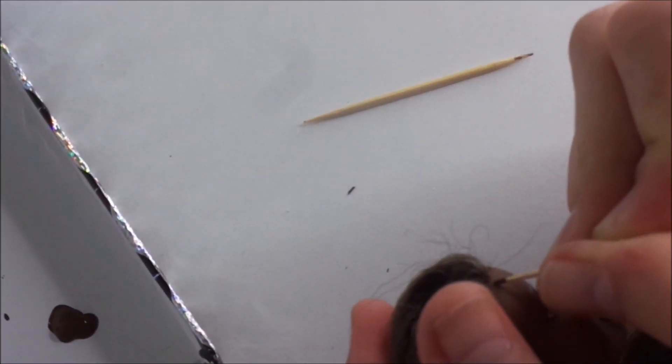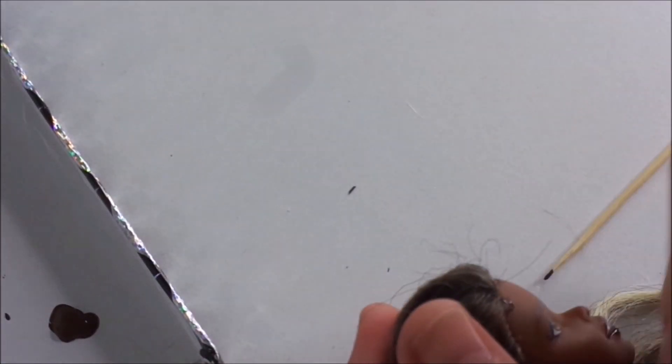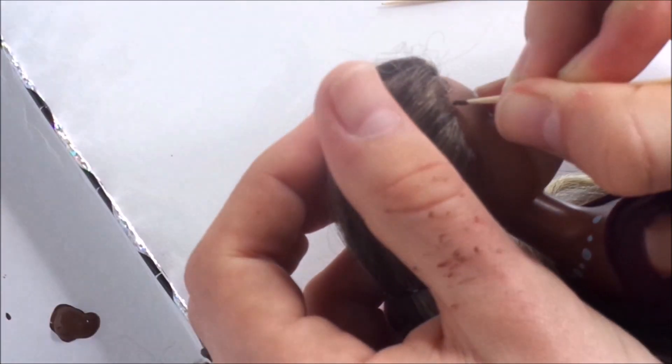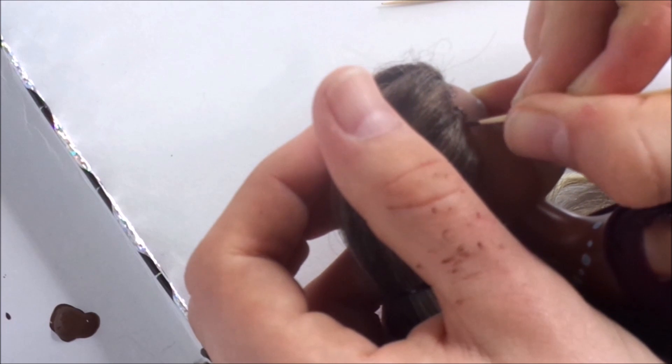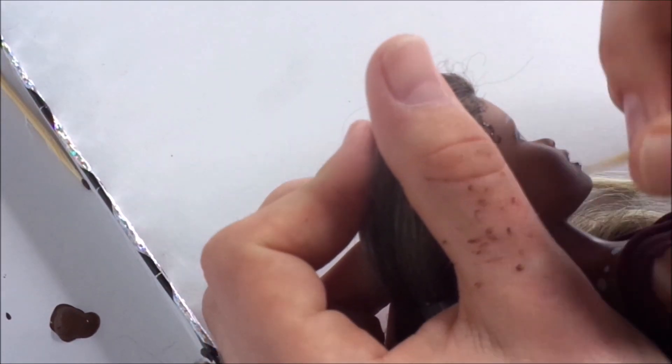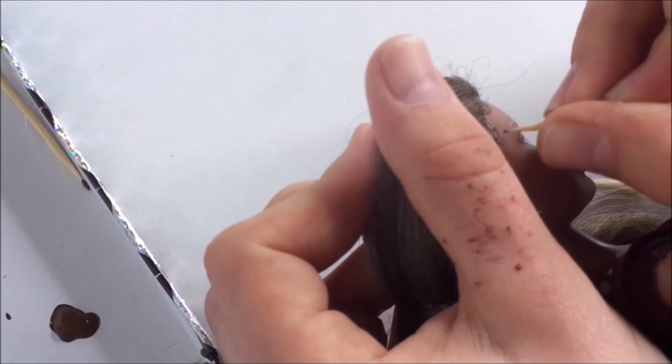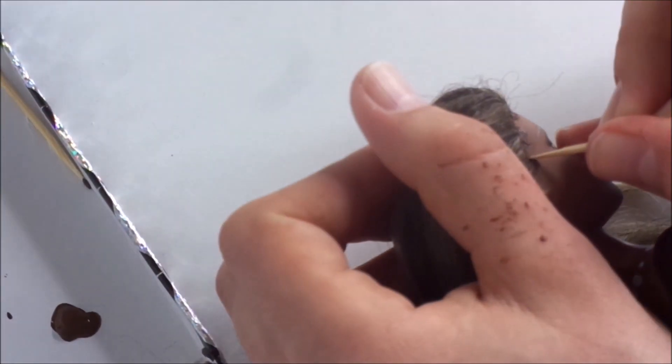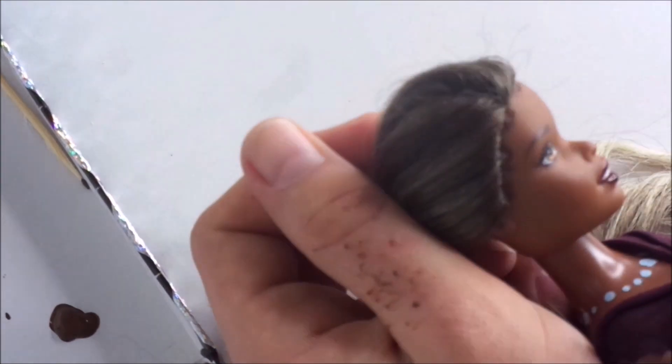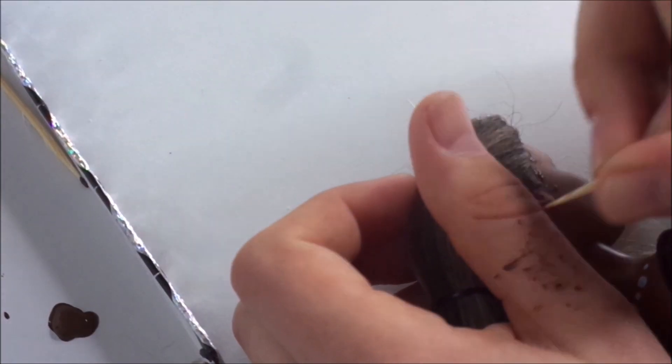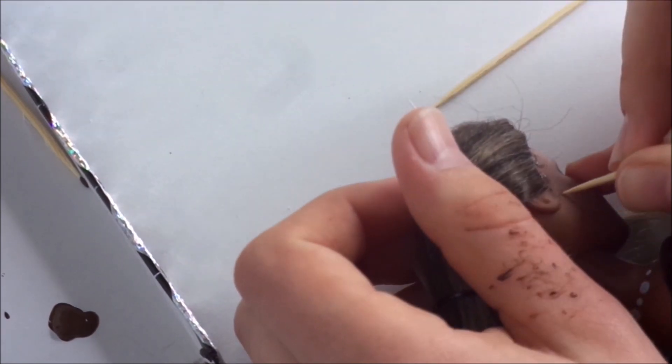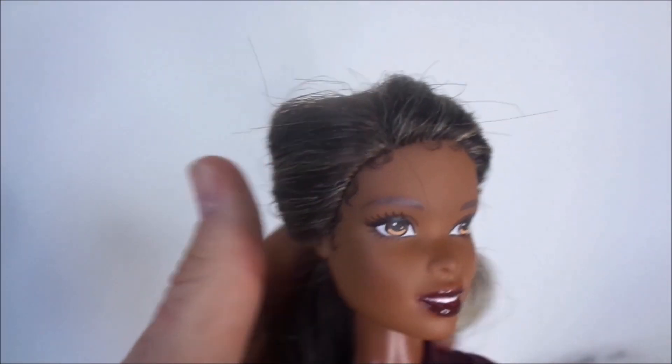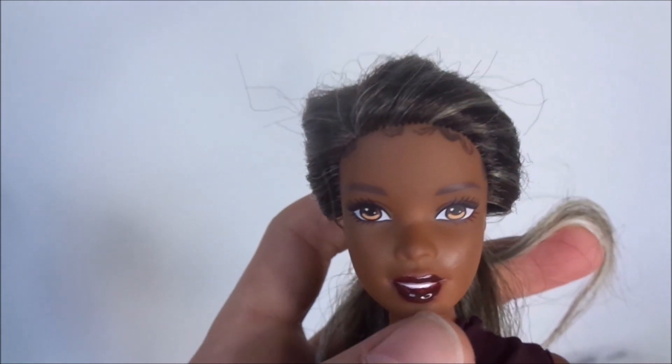And for the other side I try to give the doll pretty similar swoops to give her a more symmetrical look. Then when you're happy with how the hairline looks you just want to let it dry before styling the hair and you're done.